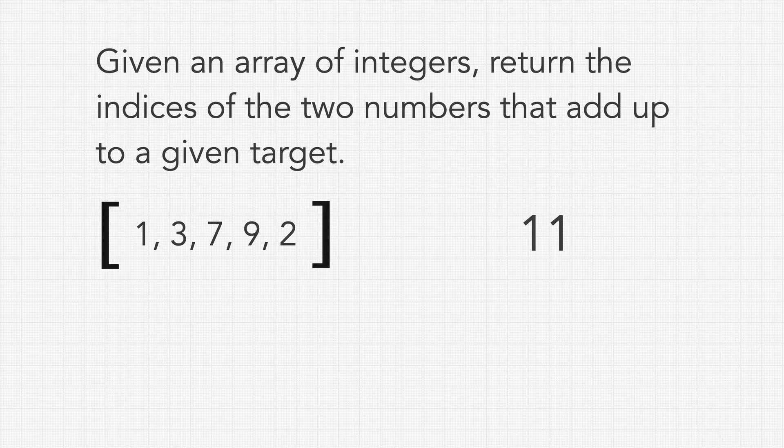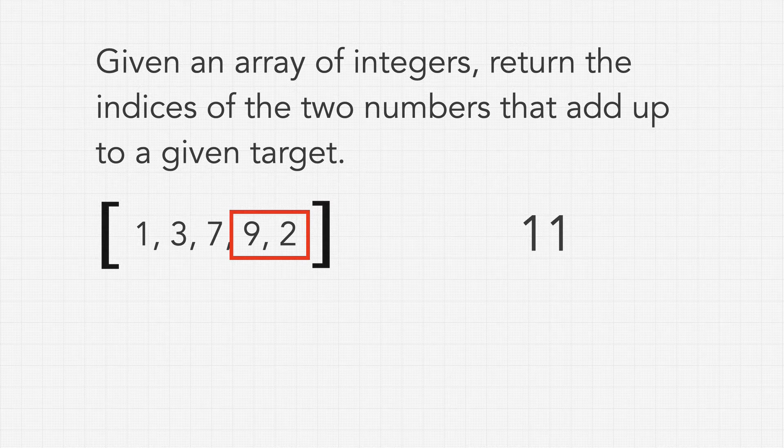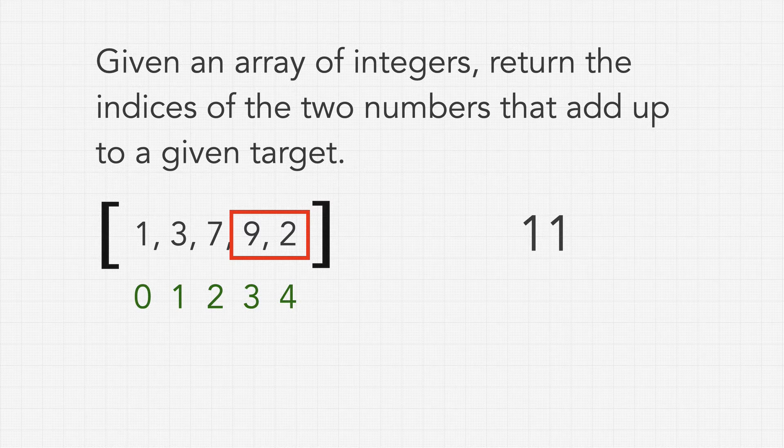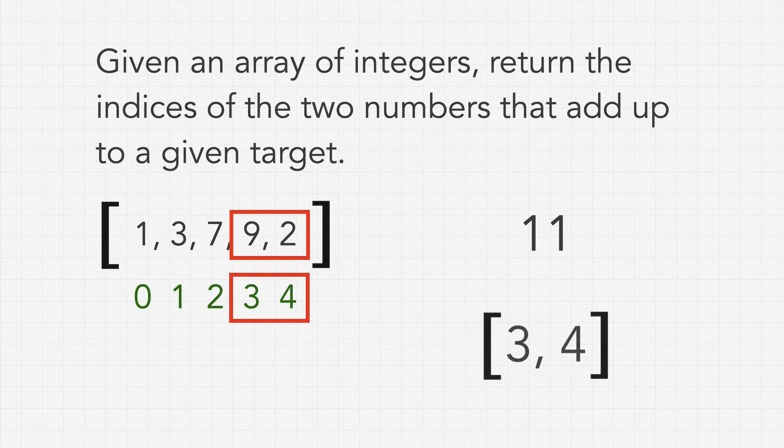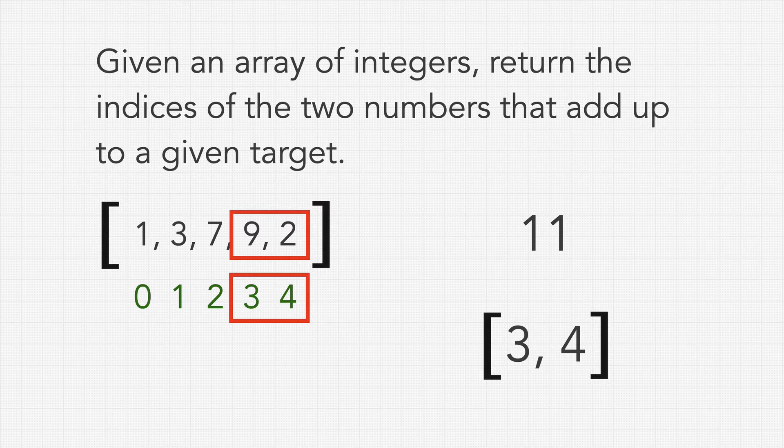In this case when we look here we see that 9 and 2 at the end of this array add together to give us 11. Now the question does ask us to return the indices of the two numbers, and if we remember with arrays, indices start at 0 and go up from there for every subsequent value. So here we know that the answer we need to return is 3 and 4, and that's what we're gonna give back as the correct answer, an array containing 3 and 4, which are the indices of the 9 and 2 which add together to 11.